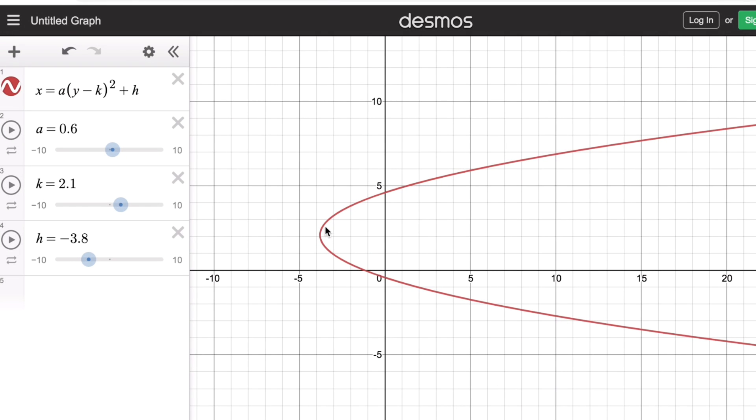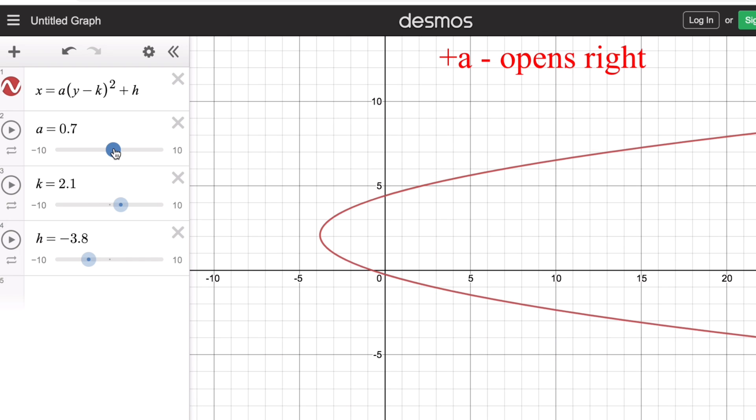So this is the graph of a sideways parabola or sleeping parabola. We remember that if a is positive, the parabola opens to the right. As you can see, this graph opens to the right.